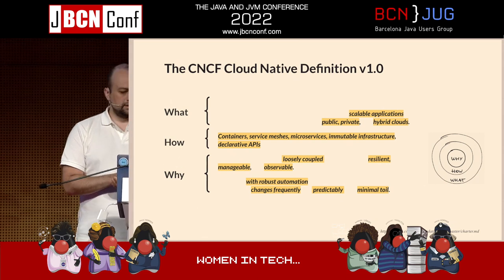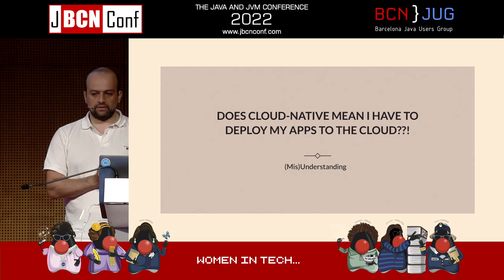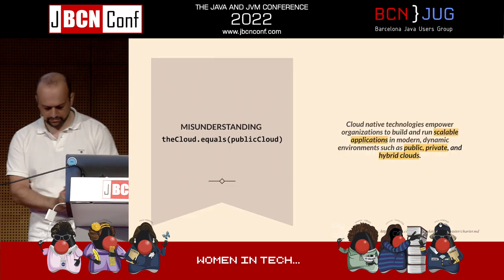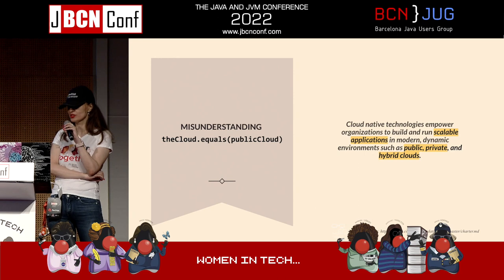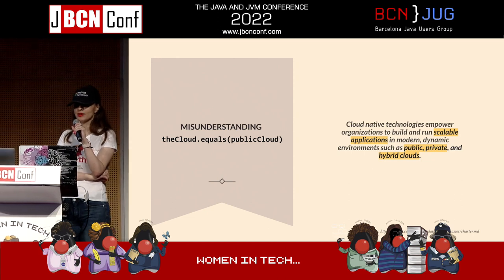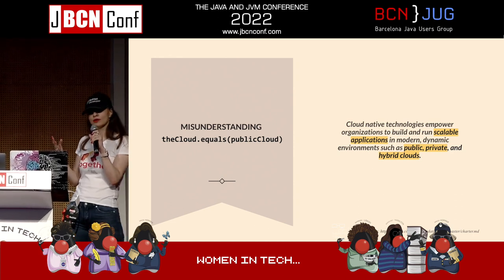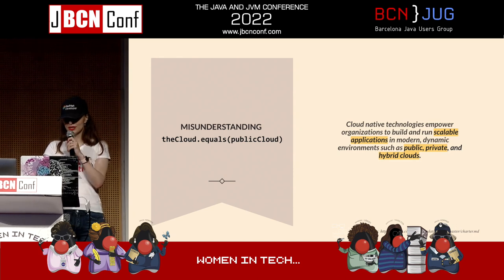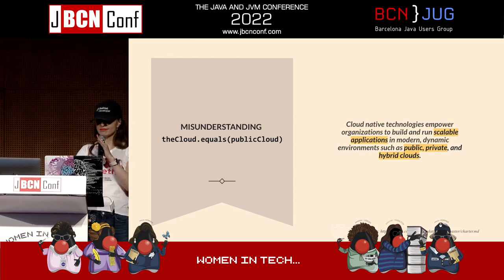Now that we have a definition, let's talk a little bit more about cloud native. Does it mean we have to deploy all our apps to the cloud? Well, if you look at the definition, we should focus on building applications that are modern and scalable. The deployment location can be anything — public, private, or hybrid. A common misunderstanding is that cloud means public cloud. However, it's not necessary to deploy on a public cloud to build cloud-native applications, so you're not missing anything if you deploy on private or hybrid infrastructure.